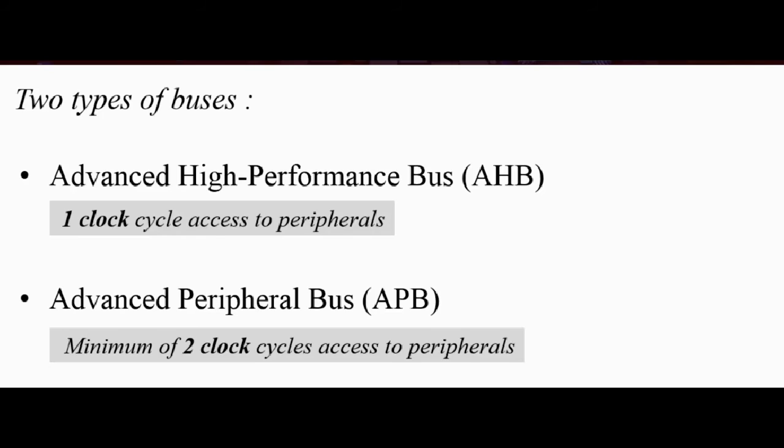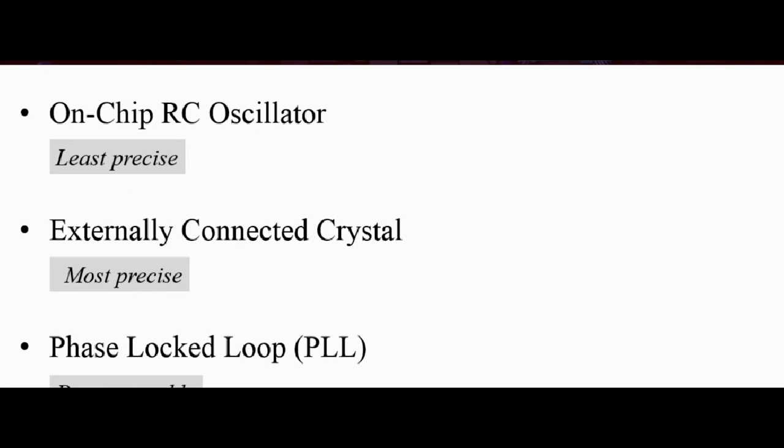Okay, so now let's talk about our microcontroller clock sources. So we have three options for our clock source. We have the on-chip RC oscillator. RC stands for resistor capacitor. So this is the least precise clock. Also